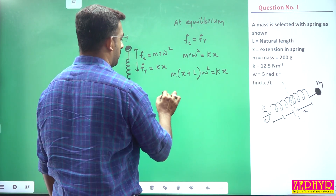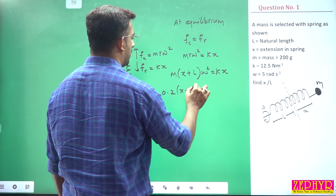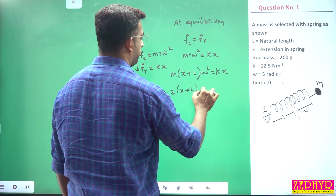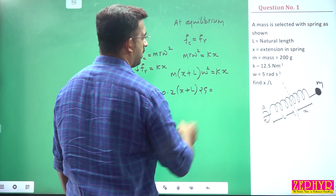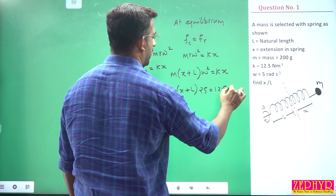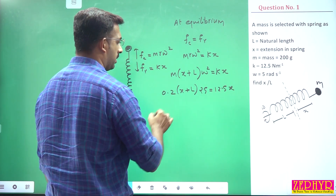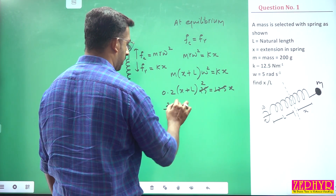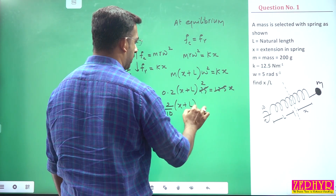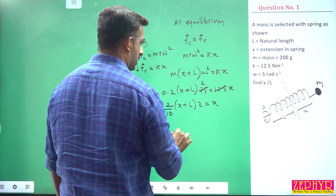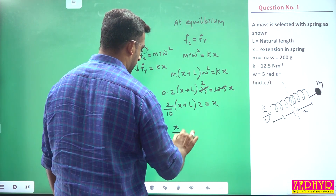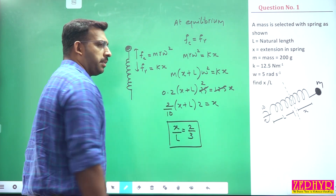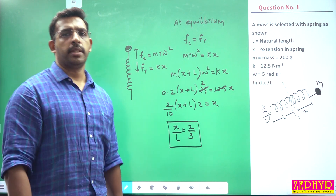With m = 200 grams = 0.2 kg, substituting: (x + L)·ω² = (k/m)·x. Simplifying: 12.5 × 2 = 25, and 2 by 10 into x by L into 2 equals x. Simplifying, we get x/L = 2/3.